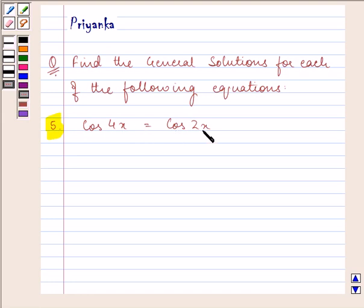Let us proceed. Taking cos 4x to the right side, we have cos 2x minus cos 4x equals 0.